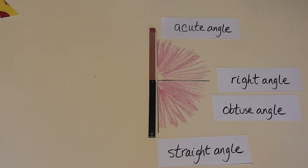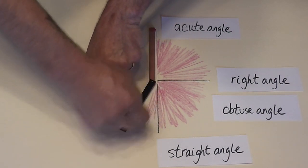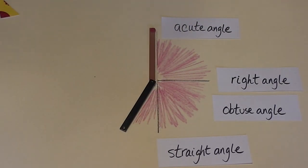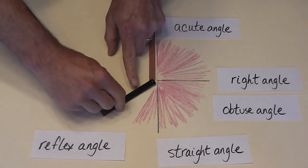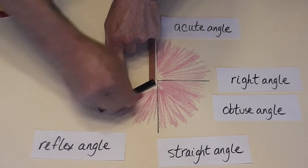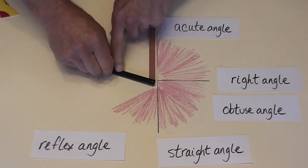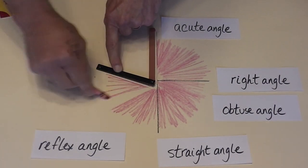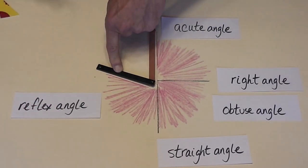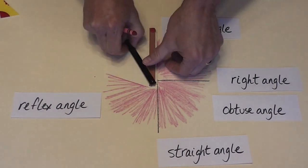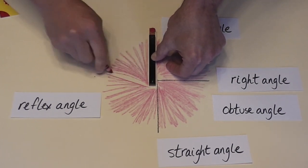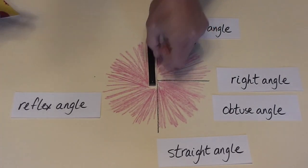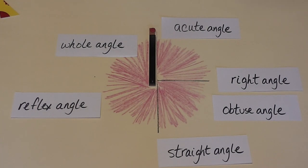We're going to go beyond a straight angle now. I'm going to color it in and we've just formed a reflex angle. I'll color it in some more — still a reflex angle. I'm going to go all the way back and color this all in. And when we've gone all the way around, we have formed a whole angle.